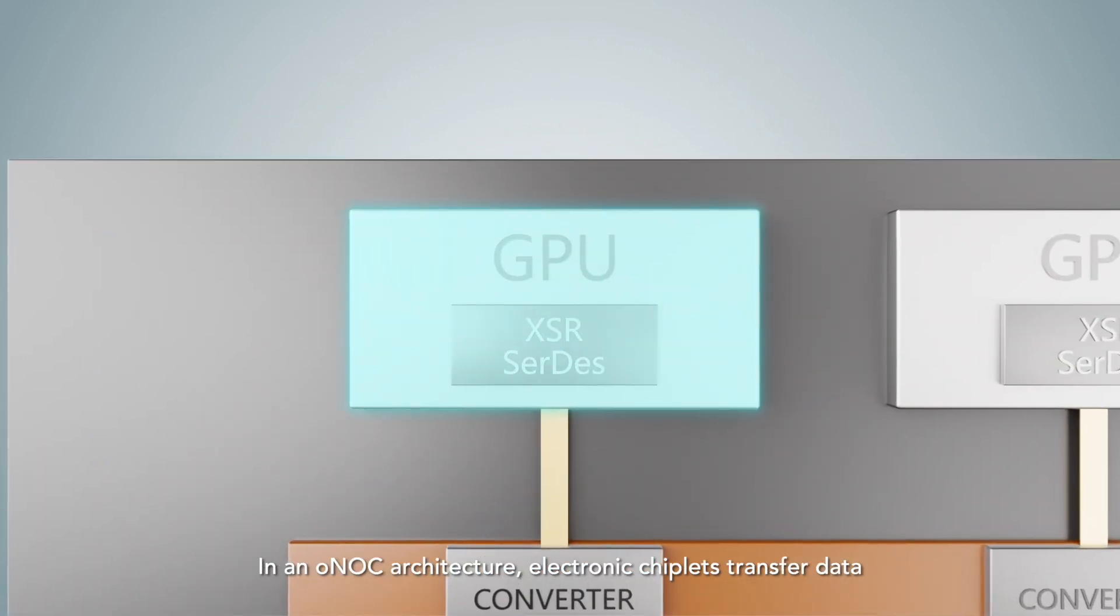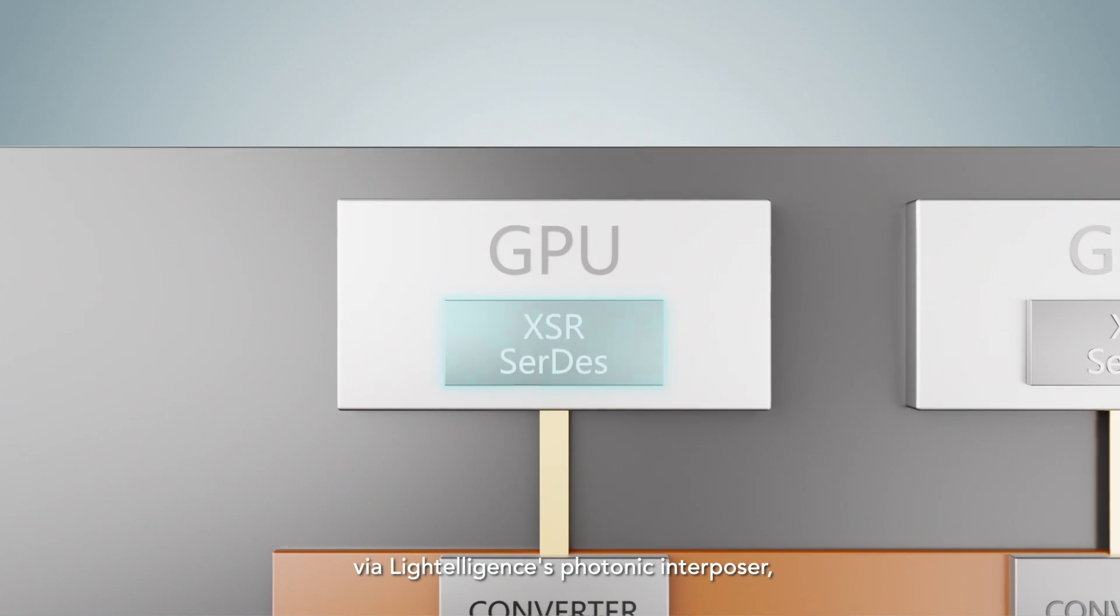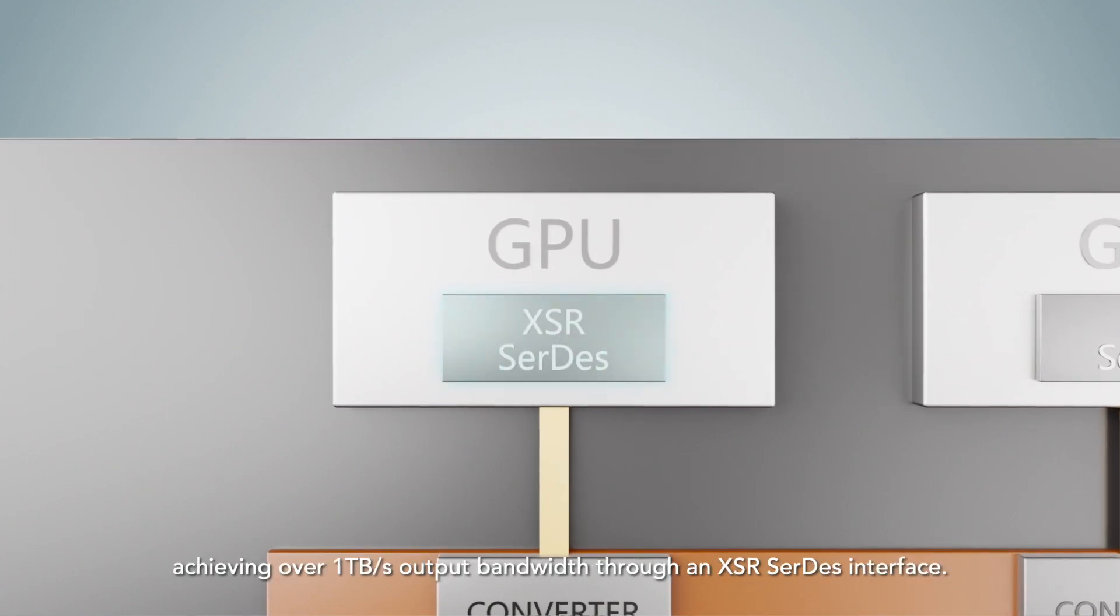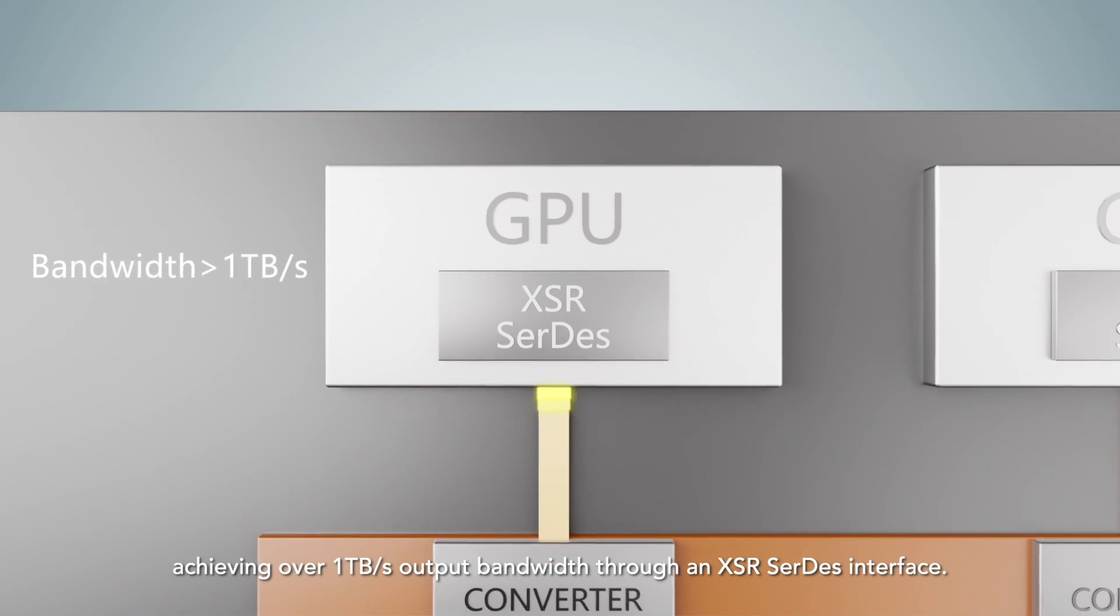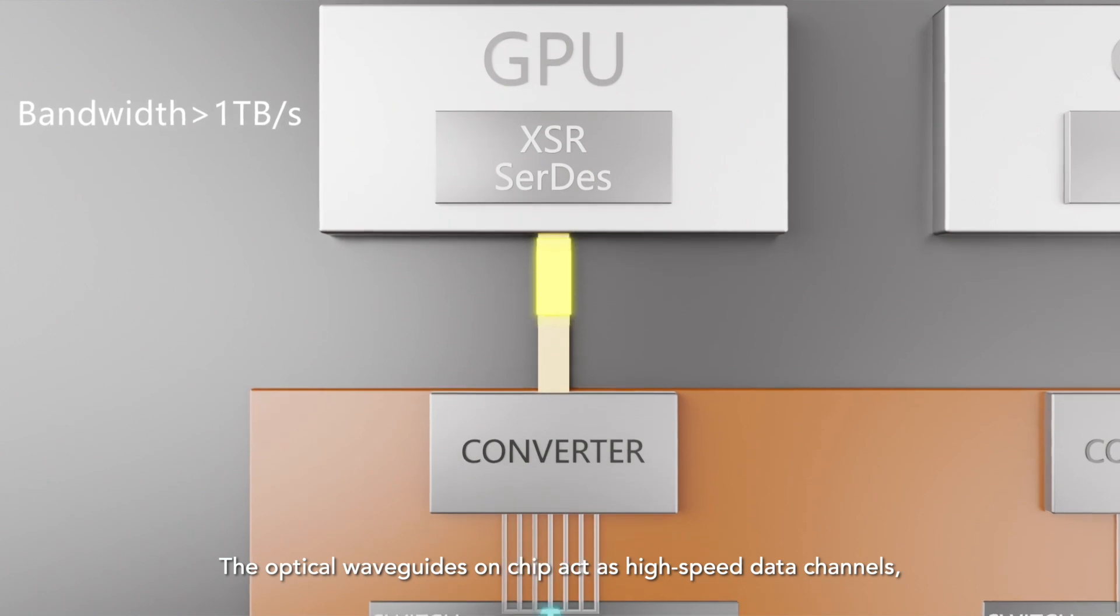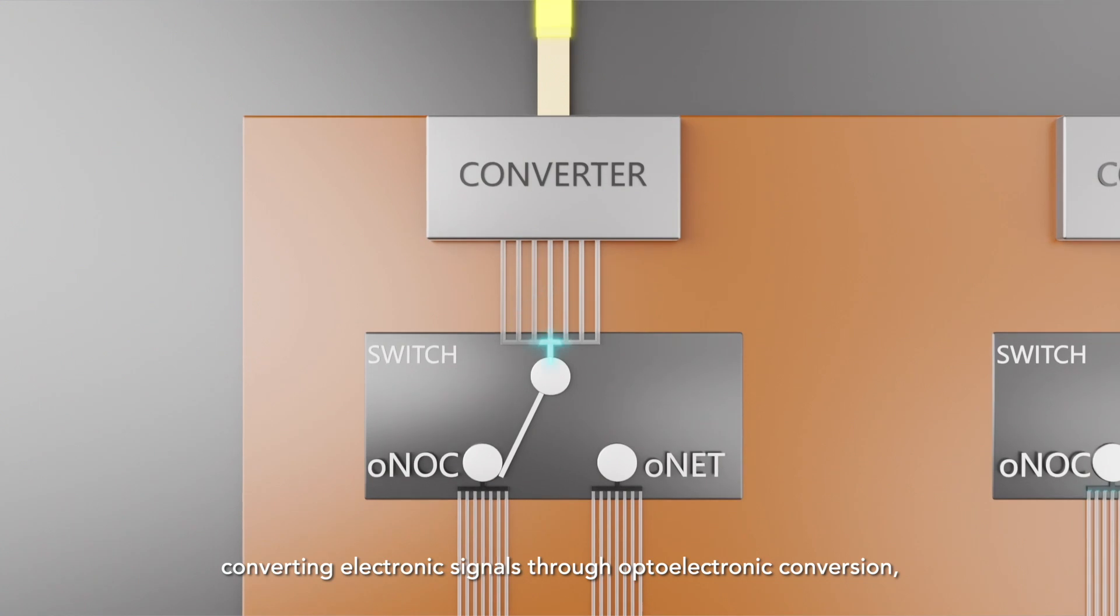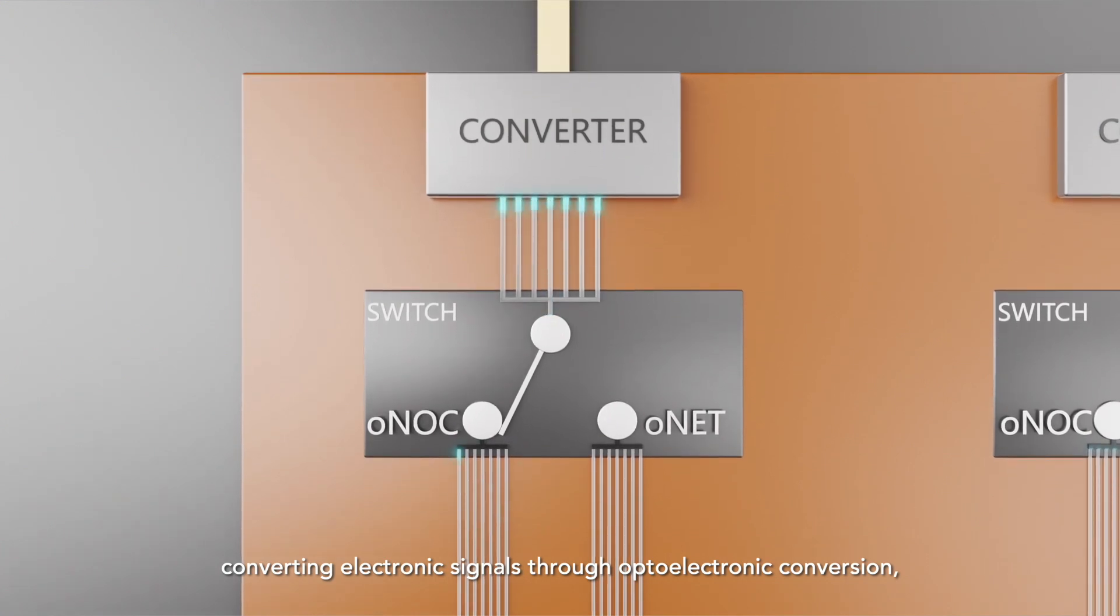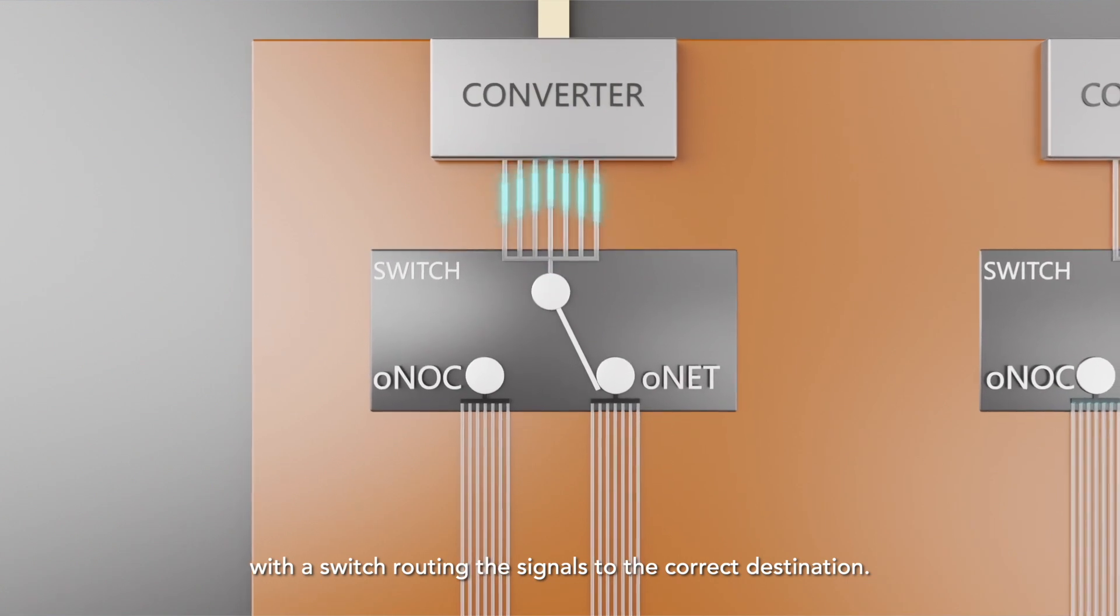In an ONOC architecture, electronic chiplets transfer data via Lightelligence's photonic interposer, achieving over 1 terabits per second output bandwidth through an XSR-SerDes interface. The optical waveguides on-chip act as high-speed data channels, converting electronic signals through optoelectronic conversion, with a switch routing the signals to the correct destination.